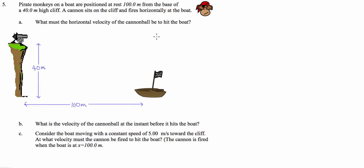What must be the horizontal velocity of the cannonball to hit the boat? To find the horizontal velocity, we first need to work out how long the cannonball is going to take to fall to the ground level where the boat is sitting. The horizontal velocity is going to be constant the whole time, so if we can work out how long it takes to hit the water, we can work out how fast it needs to travel 100 metres. We're trying to find t, using the equation of motion: s equals ut plus one half at squared.